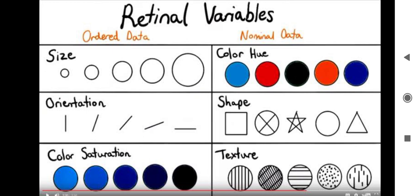These are the properties: we can easily identify and analyze an object by its size, color of the object, orientation, shape of the object, color saturation, and texture.